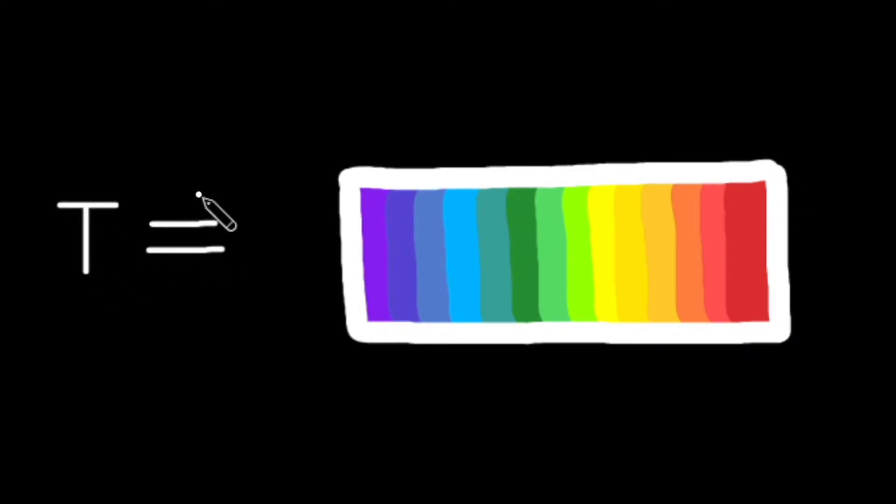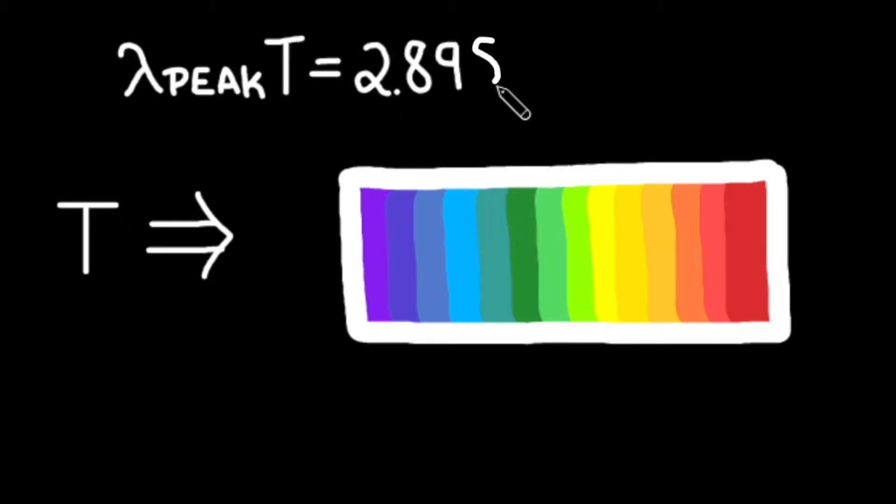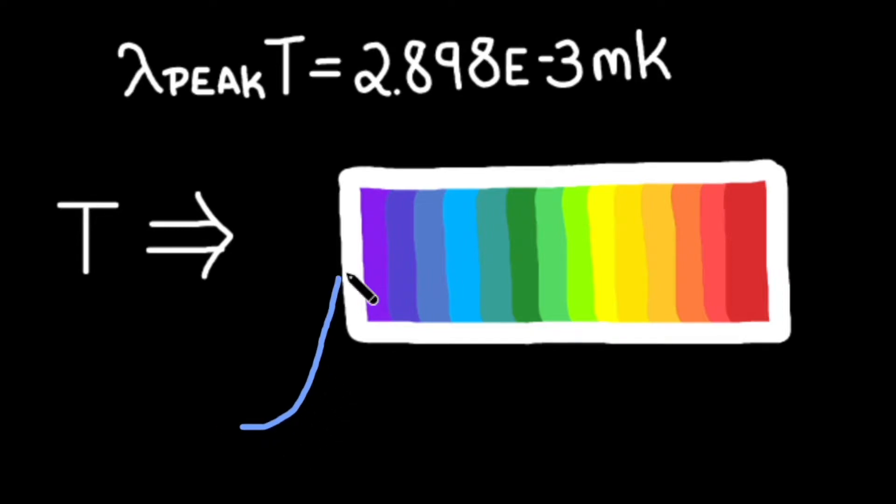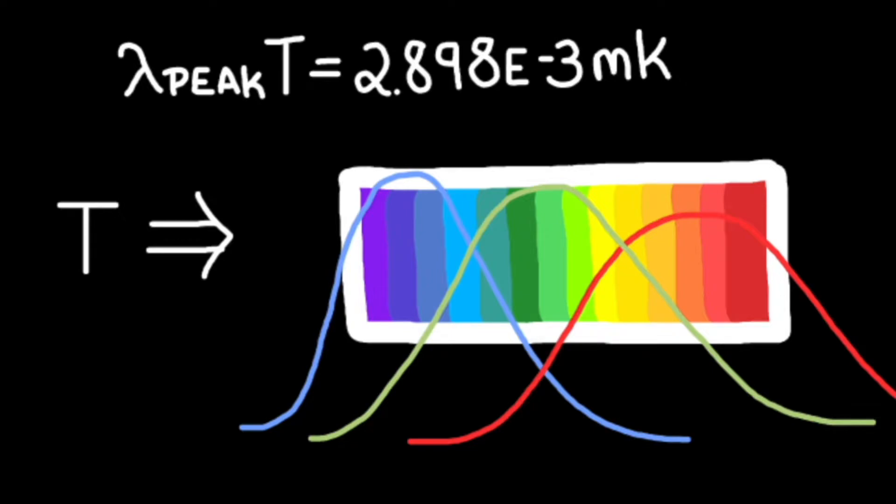A star's color is based on its temperature. As revealed from Wien's displacement law, a star's temperature dictates its peak wavelength. When this peak wavelength falls in the visible regime of the electromagnetic spectrum, the wavelength corresponds to a color that can be used to describe the star.